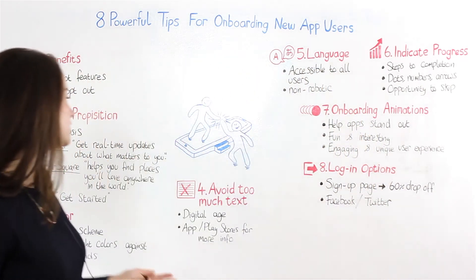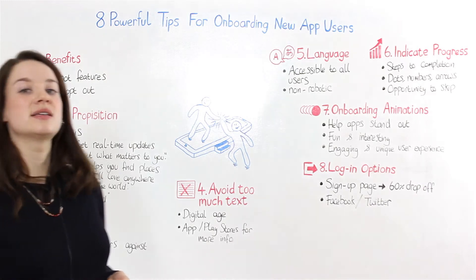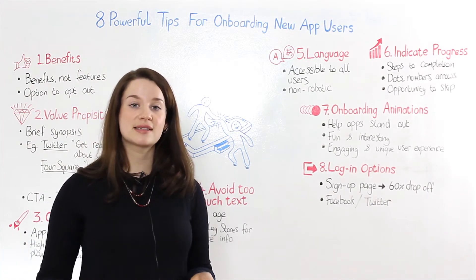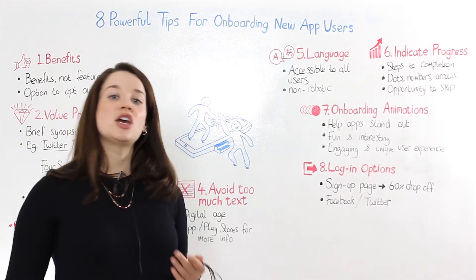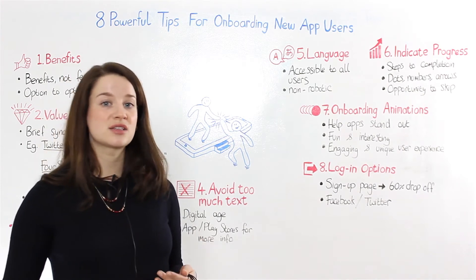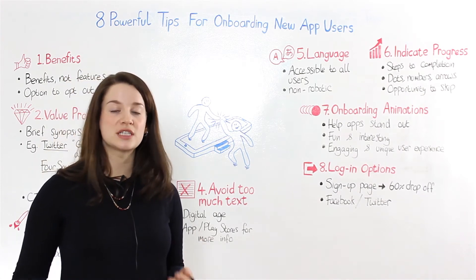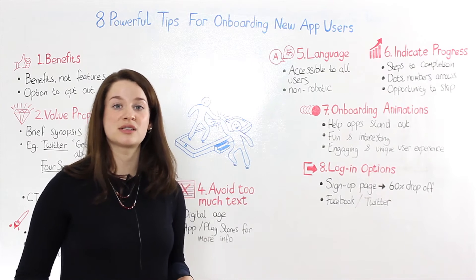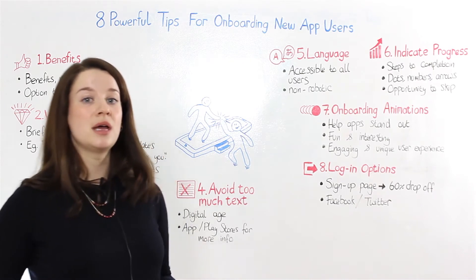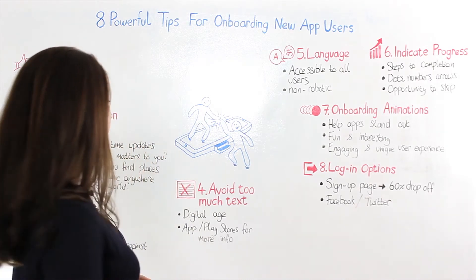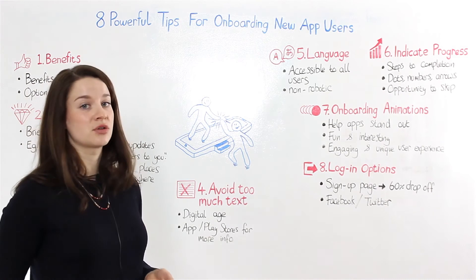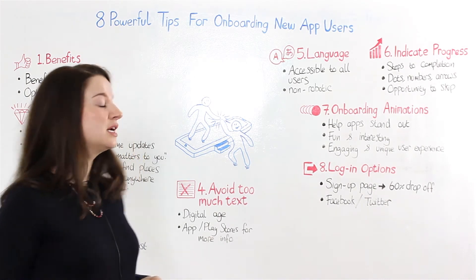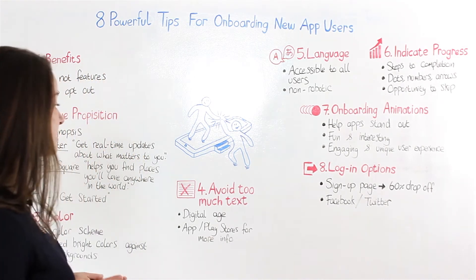Number four is to avoid too much text. We live in the digital age where we like things quite fast and immediate. If you have users reading too much text, they're going to get bored, disengaged, and they're going to opt out of the onboarding process. The App and Play stores are great — if you do have a lot of information you want to tell your users, it's a great resource there.